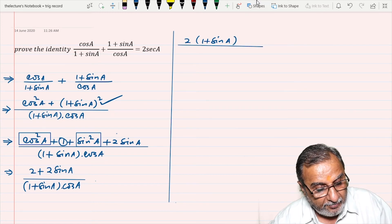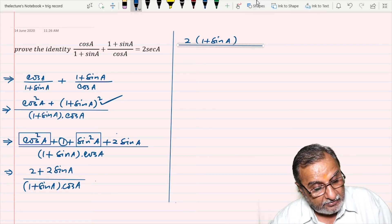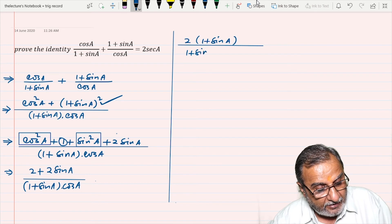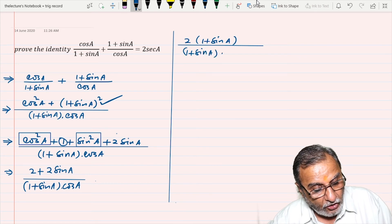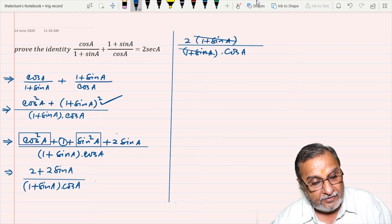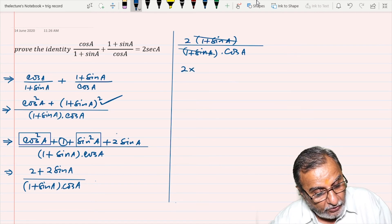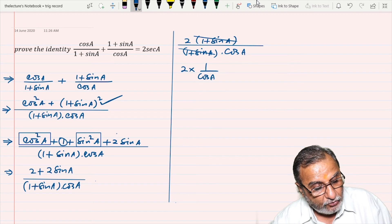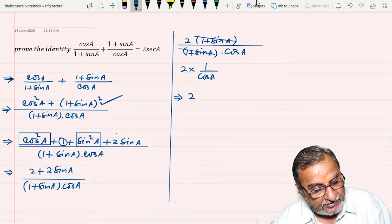And I am writing the denominator, that is (1 + sin A) · cos A. So 1 + sin A cancels, and 2 into 1 upon cos A...